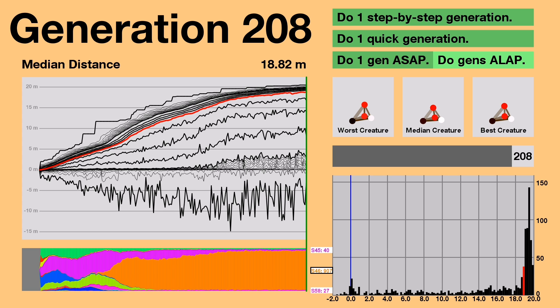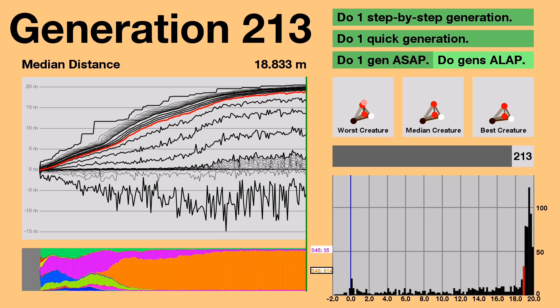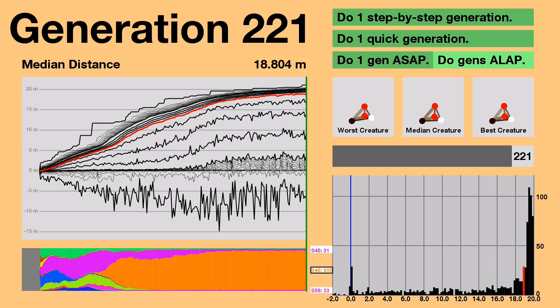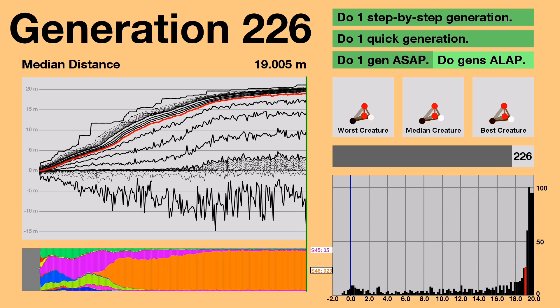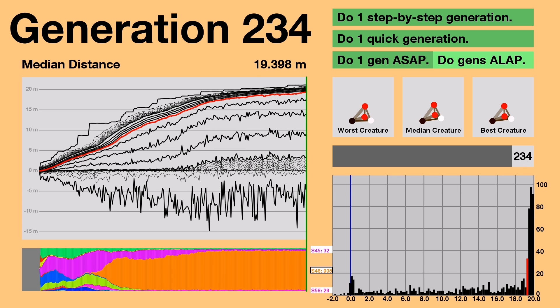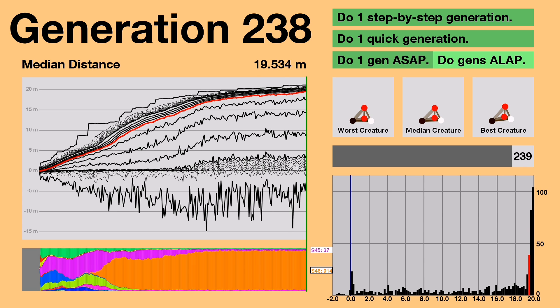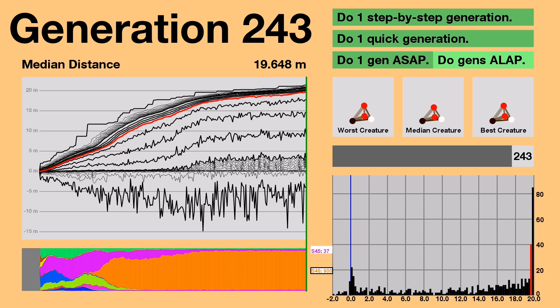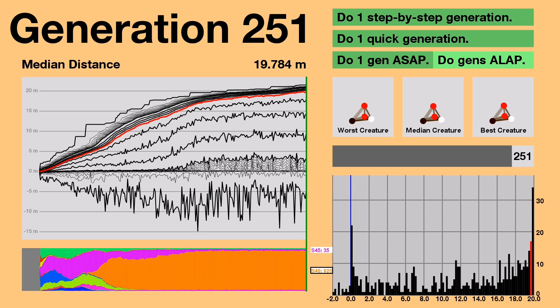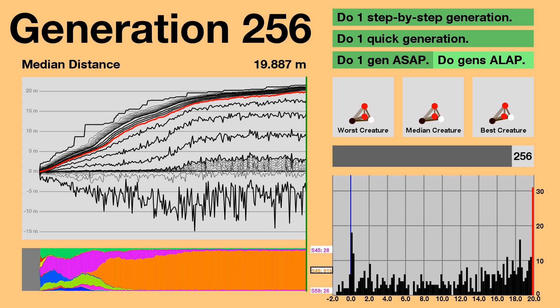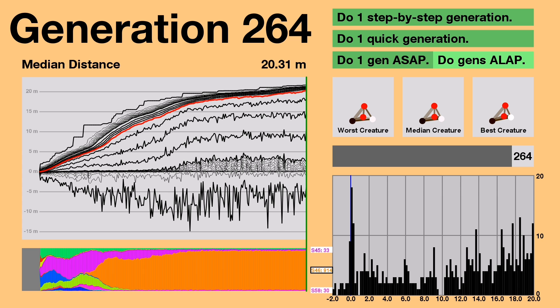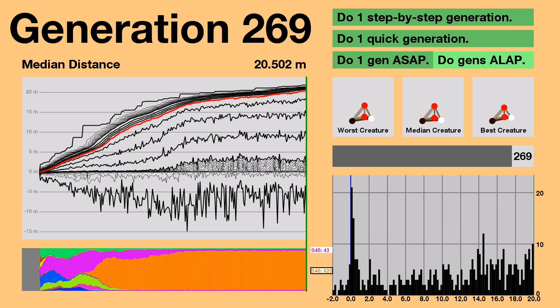Now that the fastest creature has passed 20 meters, the peak of the histogram is starting to move out of range. The creatures have done it. They've passed 20 meters. Though, their improvements are slowing down.